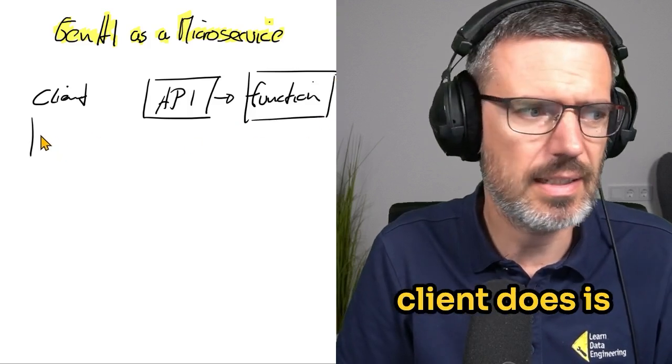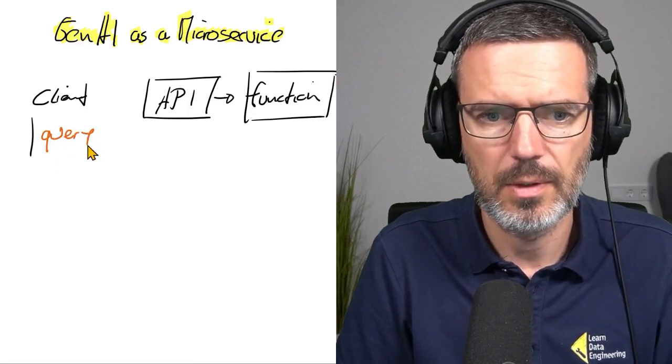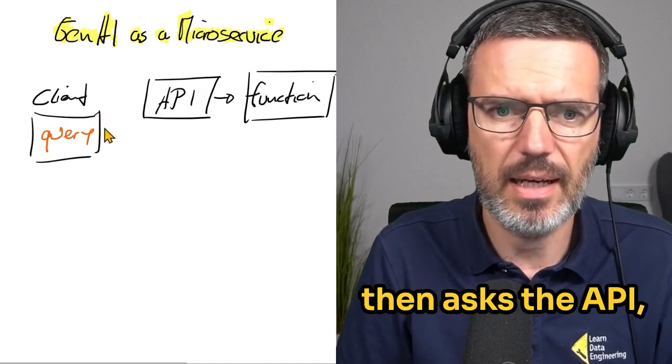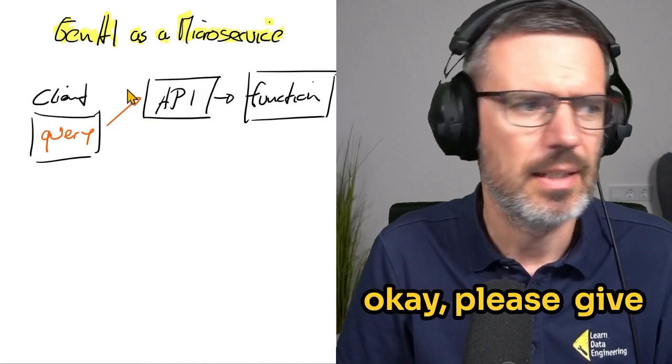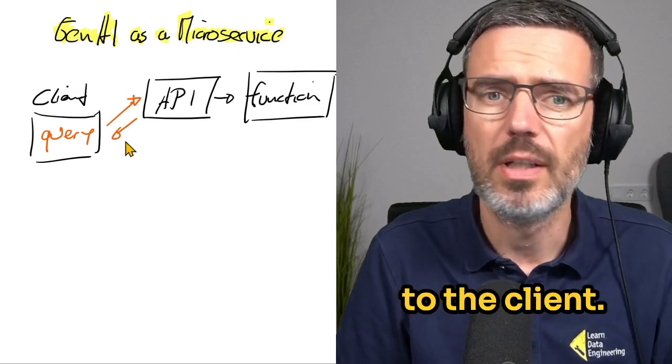And what the client does is the client here writes a query, and that query then asks the API, please give me this result, and then it returns the result to the client.